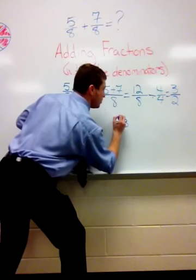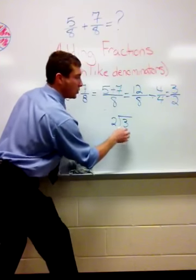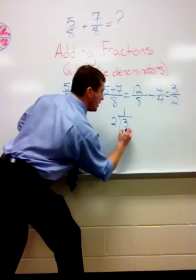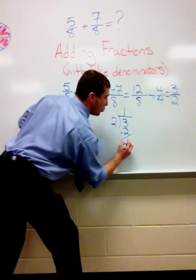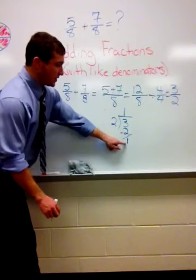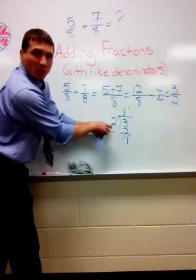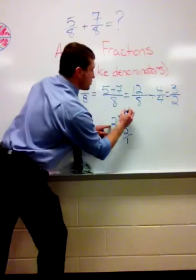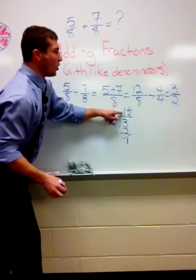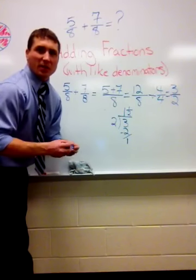3 divided by 2. 2 goes into 3 one time and when I subtract, I have 1 left over. This then becomes my numerator and this is the number of parts that it's divided into, so that is my denominator. So I have 1 and 1 half, which is the same as 3 halves.